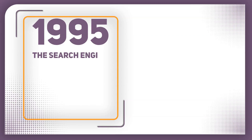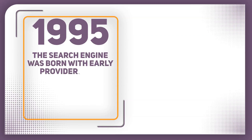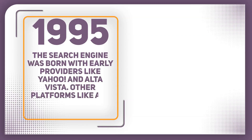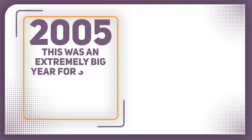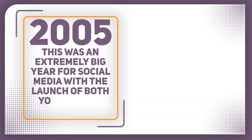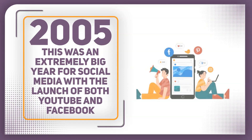In 1995, the search engine was born with early providers like Yahoo and AltaVista. Other platforms like Ask Jeeves and Google would follow just a couple of years later, and we all know Google would go on to have over 90% of the search engine traffic — not far from a true monopoly in the industry. In 2005, it was an extremely big year for social media, with the launch of both YouTube and Facebook. Social media and its ability to target specific groups of people now dominates the advertising we see, and used correctly can allow small businesses to manage some fantastic marketing campaigns.